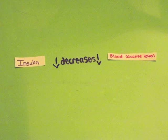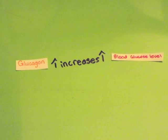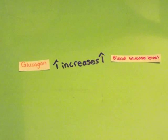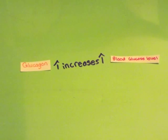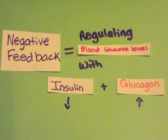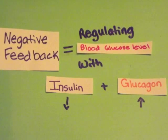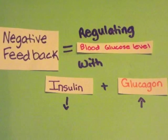Insulin lowers blood glucose levels and is released when glucose concentrations exceed normal. Glucagon raises blood glucose levels and is released when there is a deficit of glucose in the blood. Blood glucose levels need to be within a certain range in order for the body to function properly.